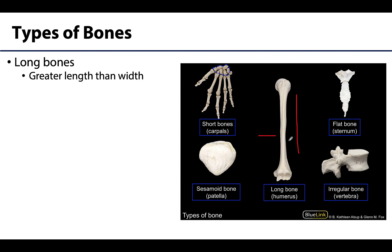These bones are mostly compact bone in the body region, so in this region here will be mostly compact bone, and then the ends of the bone will be made up of mostly spongy bone.